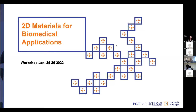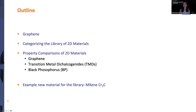We have a two-day half-day workshop covering transition metal dichalcogenides and black phosphorus as some of the most well-studied classes of 2D materials so far, and then I will give one example of a new material for the library that my group has worked on, which is the MXene Cr2C.